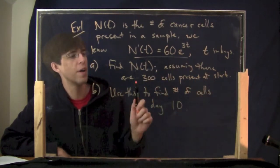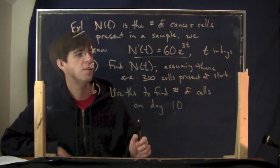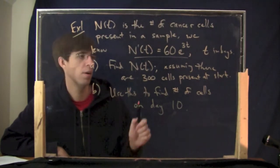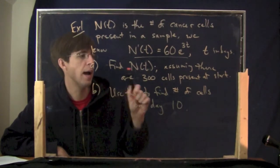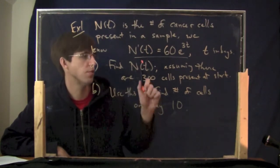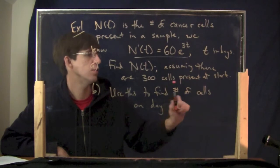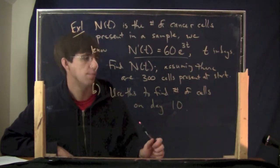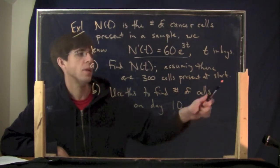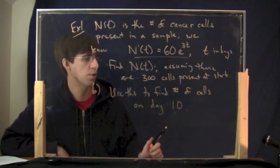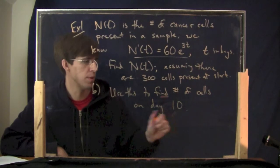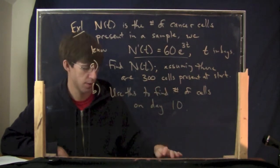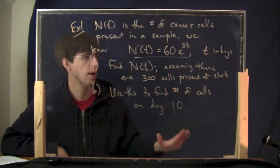The t is measured in days. Part A: find n of t — notice there's no prime there, so this would be the actual number, not the growth — assuming there are 300 cells present at the start, that would be at time zero. Part B: use the answer from Part A to find the number of cells on day 10.